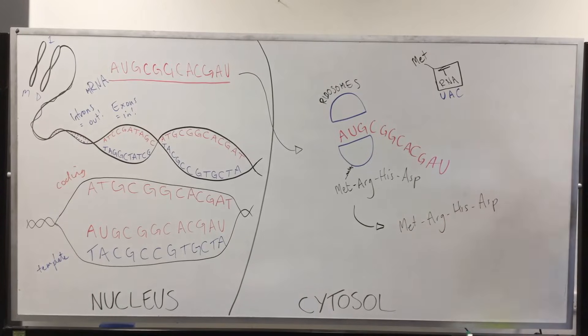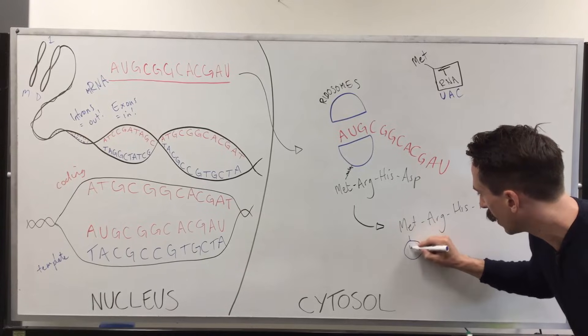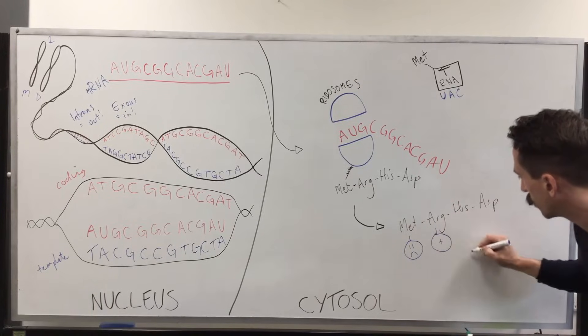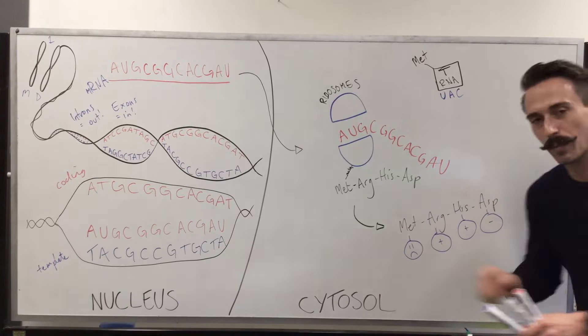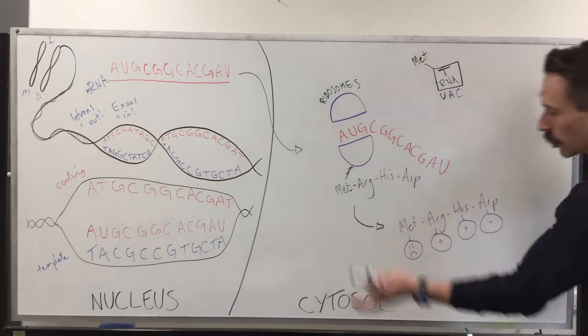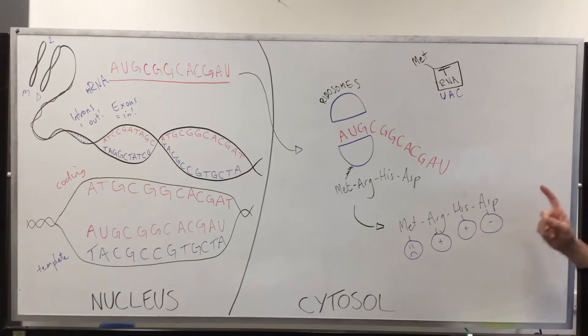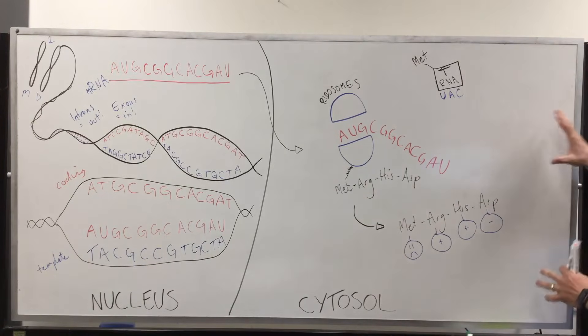Now, here's the thing with this linear molecule of amino acids, is that amino acids all have various personalities. For example, methionine, it does not like water. It's hydrophobic. Arginine has a positive charge. Histidine has a positive charge. And aspartic acid has a negative charge. Now, what this means is, and usually these molecules are a lot longer. It means that when this particular amino acid sequence, like a pearl necklace, is present within the solution of the cytosol, it will spontaneously fold. And it folds because of the different personalities of each amino acid.